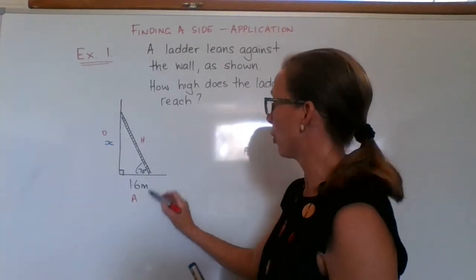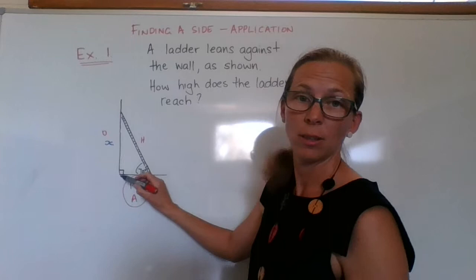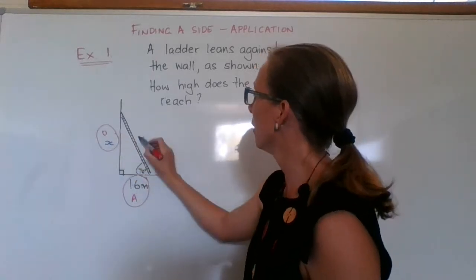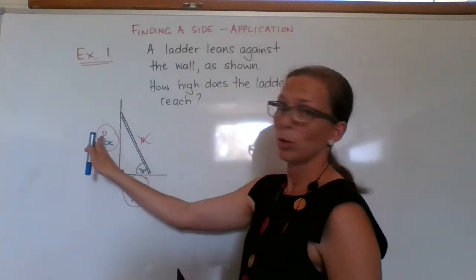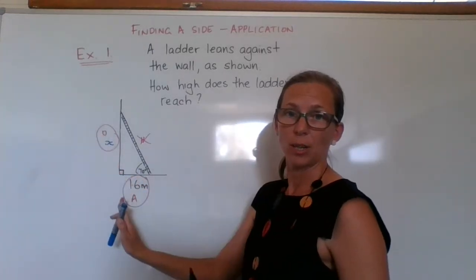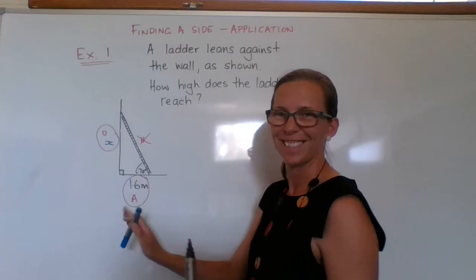I've got information about my adjacent, I want to know my opposite, my hypotenuse doesn't really help me very much at all. So we're going to use whichever trig ratio has opposite and adjacent, which is tangent.